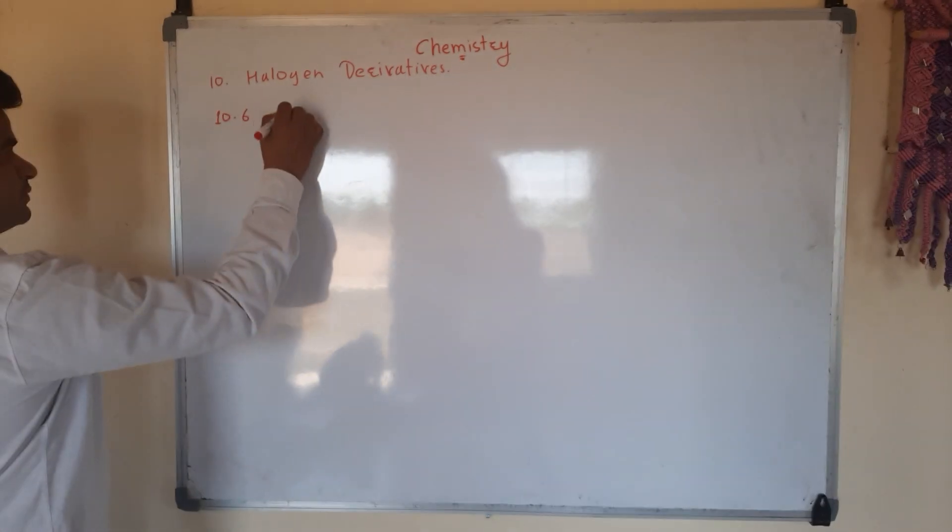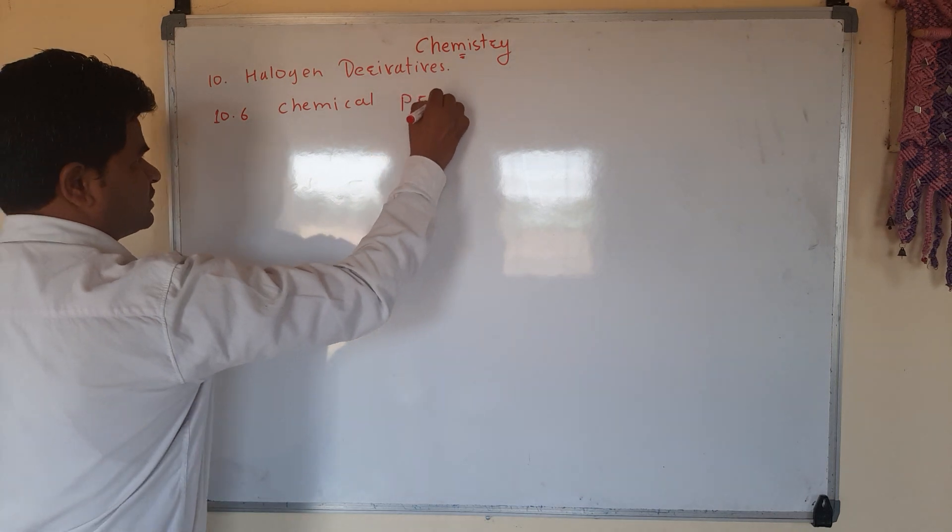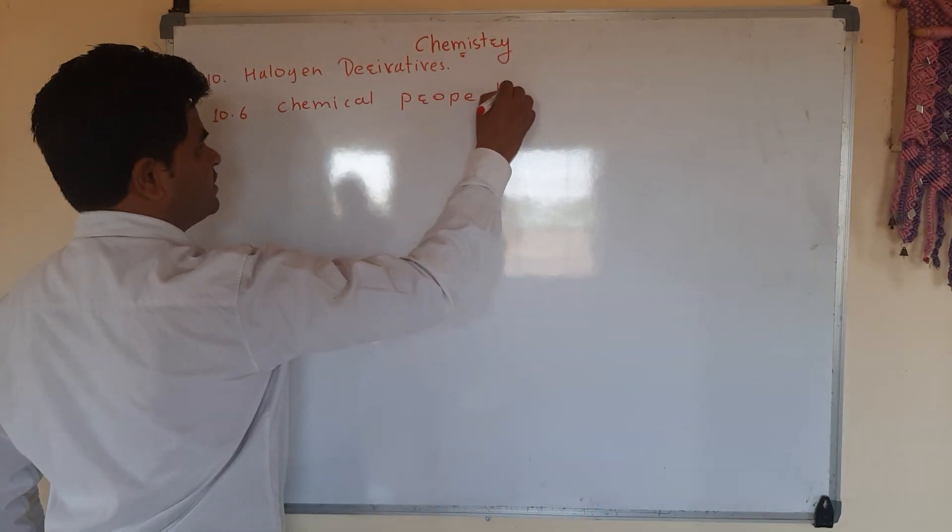That is chemical properties. Chemical properties. Alkyl halide is a chemical property.